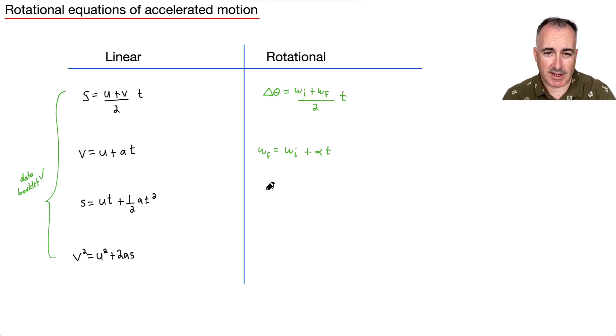Okay, instead of s, then we're going to say delta theta. And then we have ut, so that's going to be omega i times t, plus 1 half. And instead of a, we say alpha t squared.